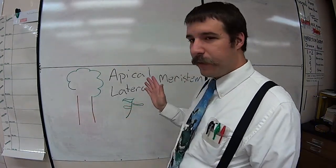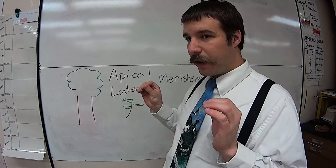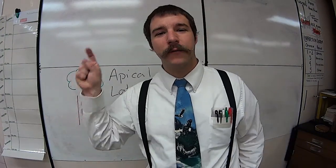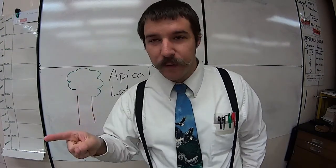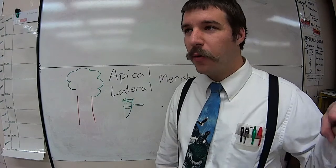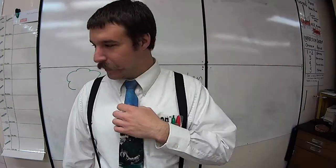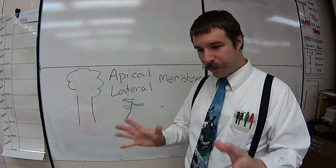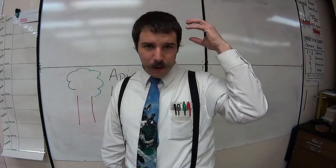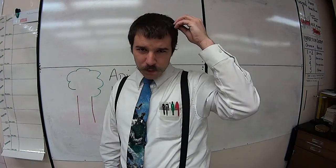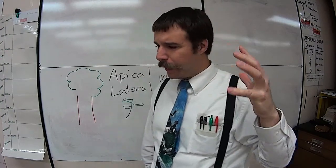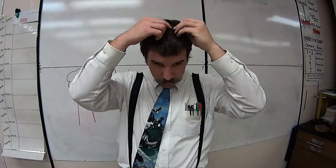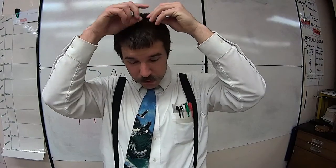There are two things you need to understand about plants and how they grow. A lot of people think that plants grow sort of like your hair. Your hair, on the top of your head, grows out of the roots — so the tips are the dead part, and the root end keeps growing longer.